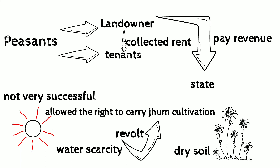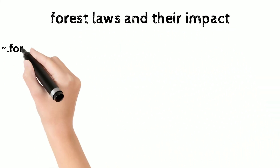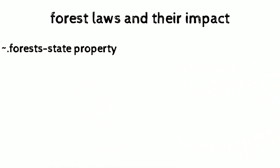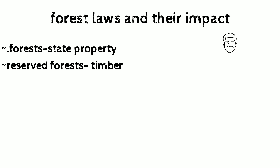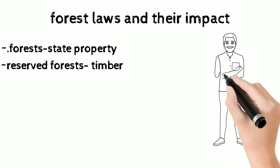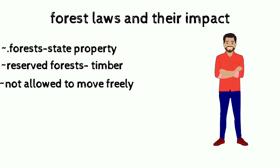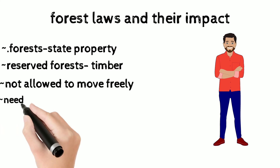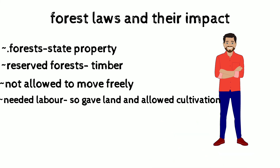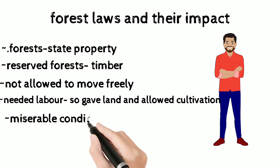Regarding forest laws and their impact: some forests were considered state property while other forests were reserved because they had timber, which could provide huge profits to the British. This led to restrictions on the movement of tribals — they were not allowed to move freely. But the British needed labor, so they provided tribals land and allowed cultivation, in return expecting labor from these people, which led to a miserable condition for tribals.